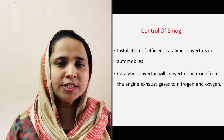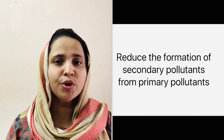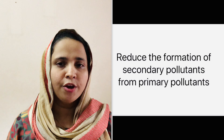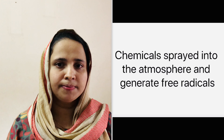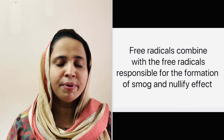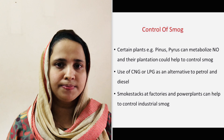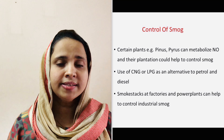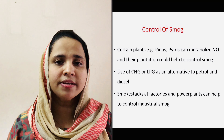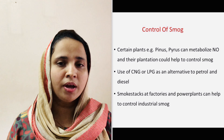Another suggestion is implementing various engine and emission controls to decrease the release of nitrogen oxides and hydrocarbons. Another method to control photochemical smog is to reduce the formation of its constituents from the primary pollutants. One method includes spraying certain chemicals into the atmosphere to generate free radicals. These free radicals compete with the free radicals responsible for smog formation and nullify their effect. Another method is planting certain plants like Pinus and Pyrus which can metabolize nitrogen oxides and reduce smog formation in the atmosphere.